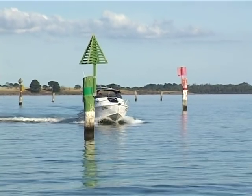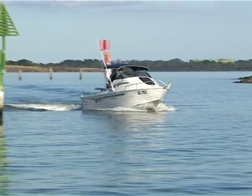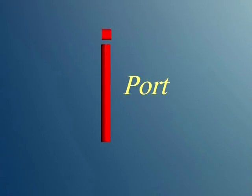When coming into port, the red marks are always on the port side, that is the left-hand side of your vessel. Port lateral marks are always colored red, and if they have a top, the shape is a can.